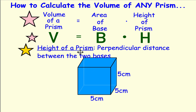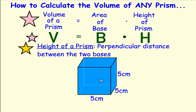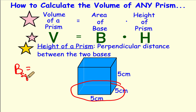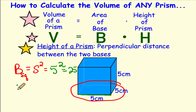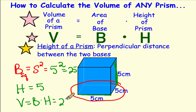Let's use this formula to find the volume of our cube. First, we figure out big B, the area of the base, which is a square. The formula for area of a square is side squared. Since the square has an edge of 5, that gives us 5 squared, which is 25. The height is the distance between the two faces, which is 5 centimeters. So the volume is 25 times 5, which is 125 cubic centimeters.